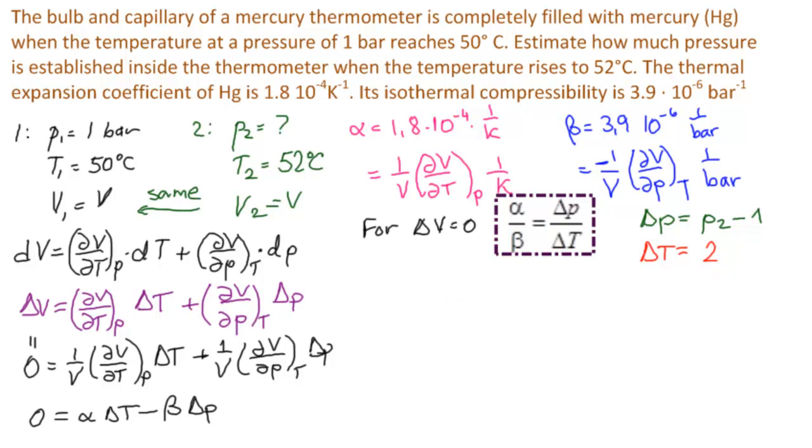So we have 1.8 times 10 to the minus 4 divided by 3.9 times 10 to the minus 6 equals P2 minus 1 over 2. So what does P2 equal?